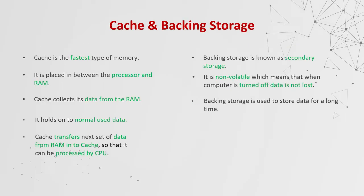Cache and backing storage. Cache is the fastest type of memory. It is placed in between the processor and RAM. Cache collects its data from the RAM and holds on to normal use data. Cache transfers the next set of data from RAM into cache so that it can be processed by the CPU. Backing storage is known as secondary storage. It is non-volatile, which means that when the computer is turned off, data is not lost. Backing storage is used to store data for a long time.